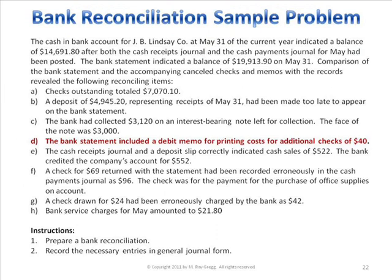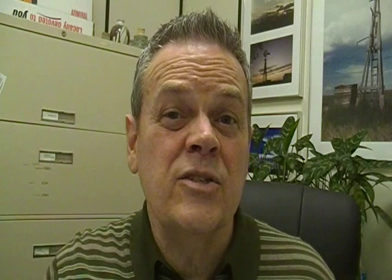Item D: the bank statement included a debit memo for printing costs for additional checks — $40. We placed an order for checks and the bank printed them and charged us $40. The bank has already deducted it from our account. This is a time lag — we have not recorded it yet, so we're going to subtract this $40 on our side of the reconciliation to reduce our balance.